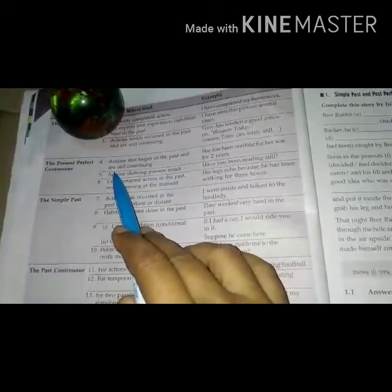The present perfect continuous: Action that began in the past and are still continuing - She has been waiting for her son for two years. Number five, action showing present result. Example: Have you been reading still? Number six, uninterrupted action in the past and not happening at the moment: His legs ache because he has been walking for three hours.